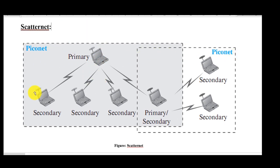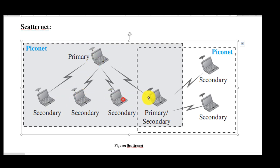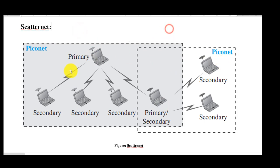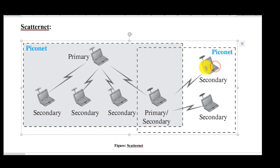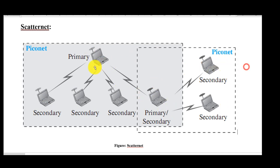Scatternet provides an extension where multiple Piconets can be connected together. One Piconet has one primary Bluetooth device with three connected devices, and another Piconet has one device connected. An intermediate node can act as both primary and secondary alternatively, serving as a bridge between two Piconets. This allows a device from one Piconet to send data to a device in another Piconet.